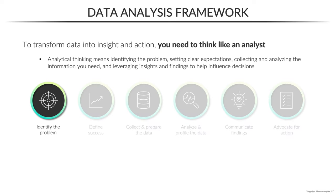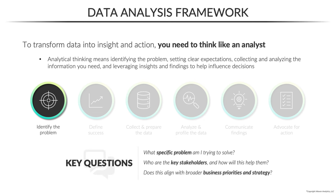It all starts by clearly identifying the problem you're trying to solve. Before you start thinking like an analyst, you need to think like a business owner. This involves asking yourself some key questions: What specific problem are you trying to solve, and which business outcomes are you trying to impact? Who are the key stakeholders and how exactly will this help them? And does your approach align with the bigger picture priorities and business strategy? Answering these questions first — which many people fail to do — will help ensure that you align on the project scope and desired outcome from day one.